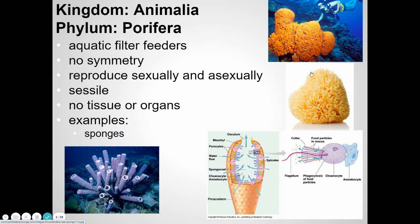Let's talk about sponges. If you buy a natural sponge at a fancy bath store, that's actually the skeleton of an animal that was once alive — not like the rectangular sponge you might have in your kitchen, which is just foam with holes in it. Real sponges stay attached to the bottom of the ocean and suck water in through all those little holes and openings. As the water comes in, they filter out little bits of food from it — bacteria, tiny little plants or animals — and that's how they get their nutrition.